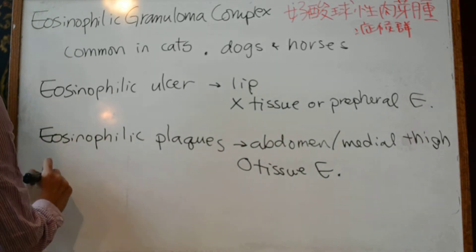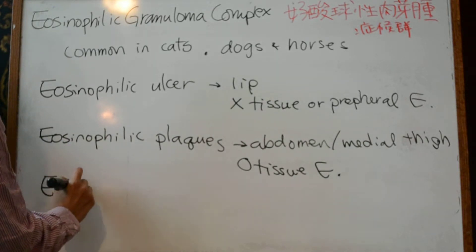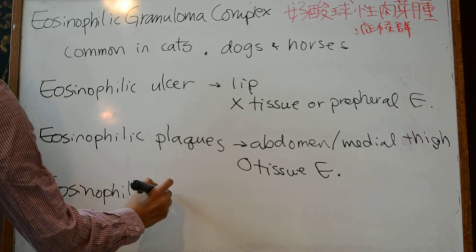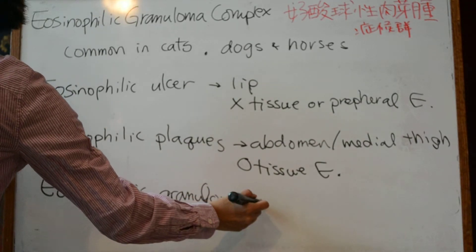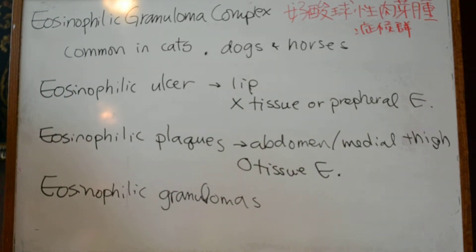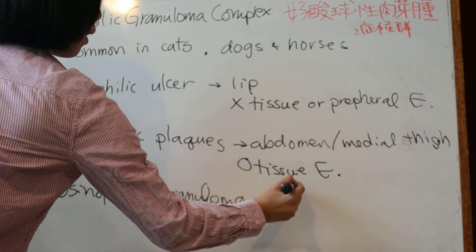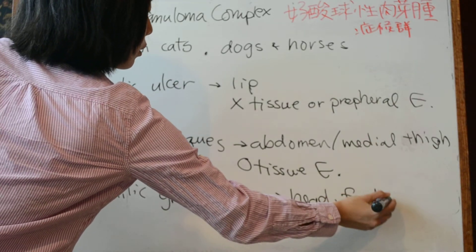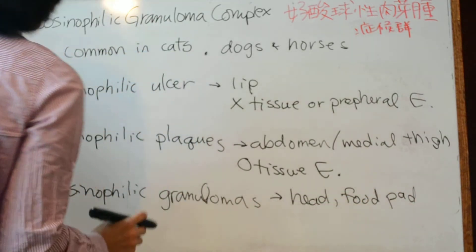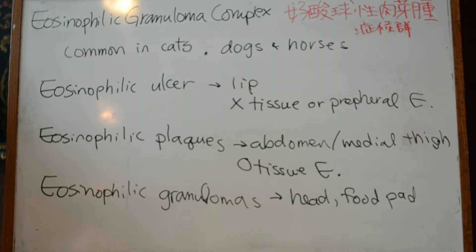Eosinophilic granulomas may appear on the head or footpad, as a linear granuloma on the caudal thigh, and elsewhere. A linear lesion is something to look for when thinking about eosinophilic granulomas.